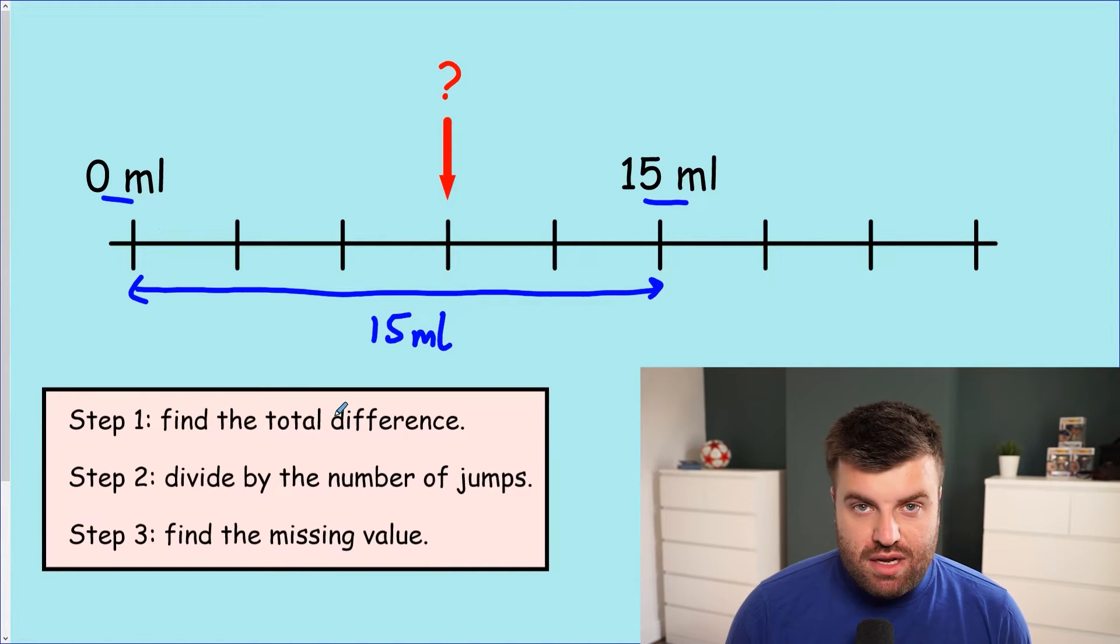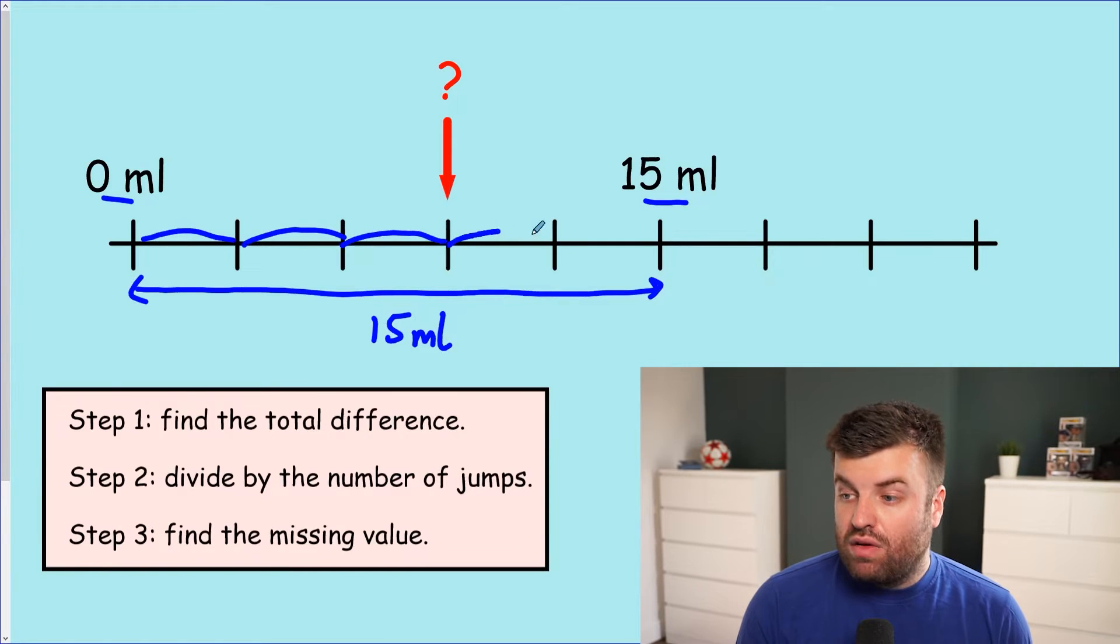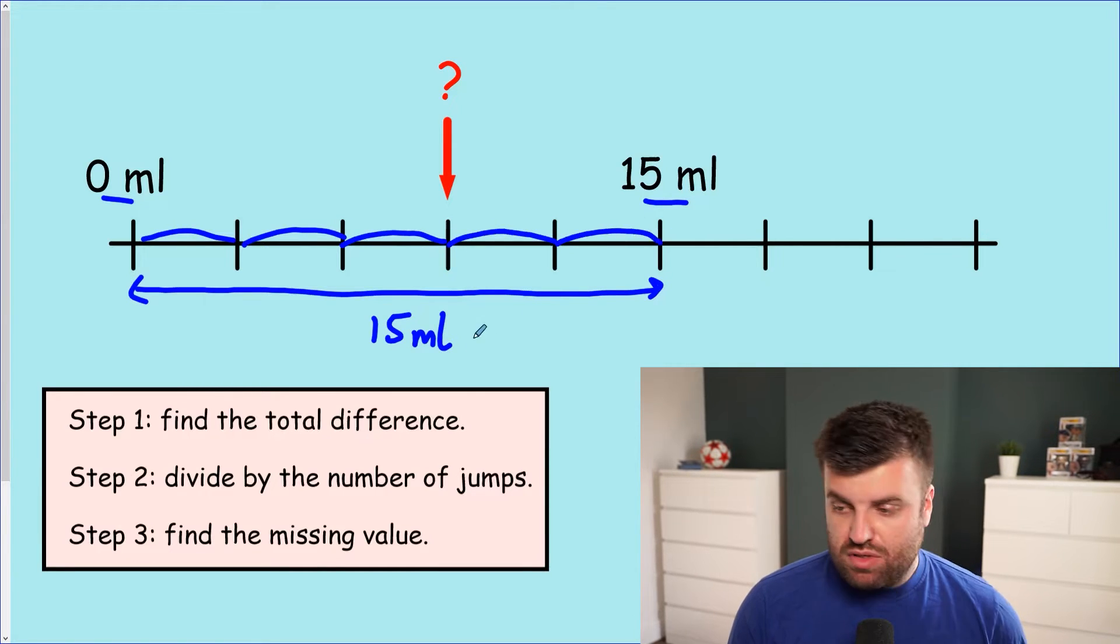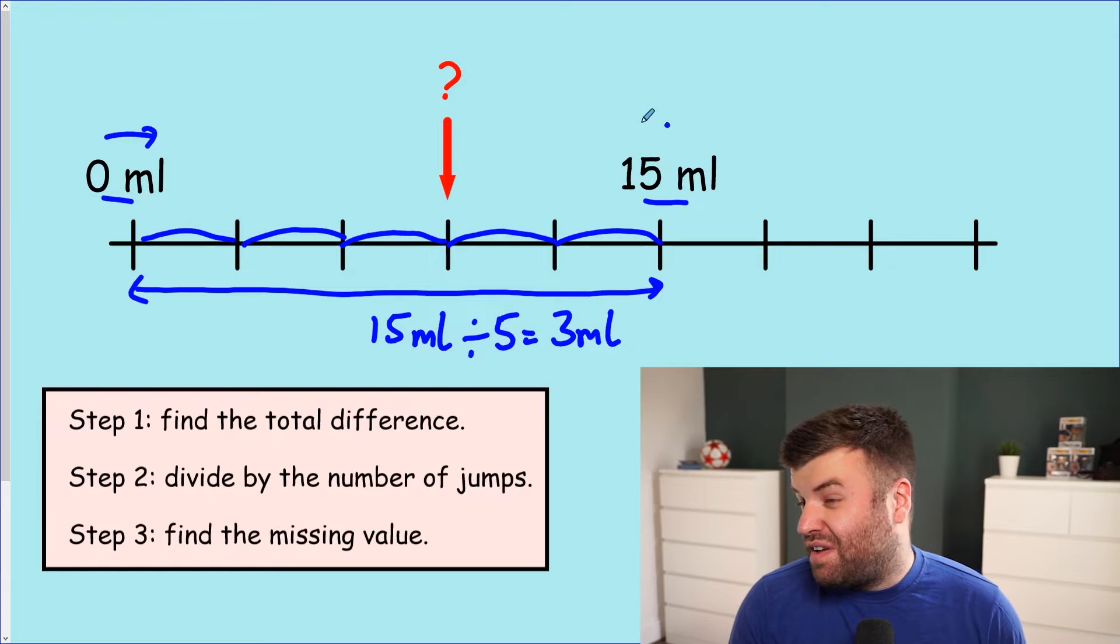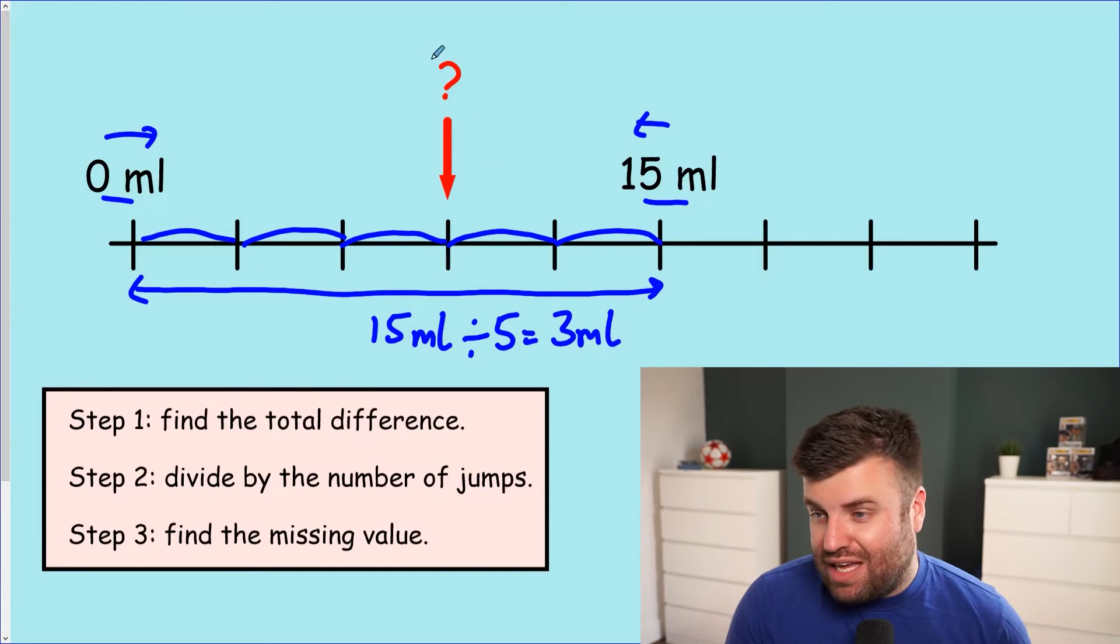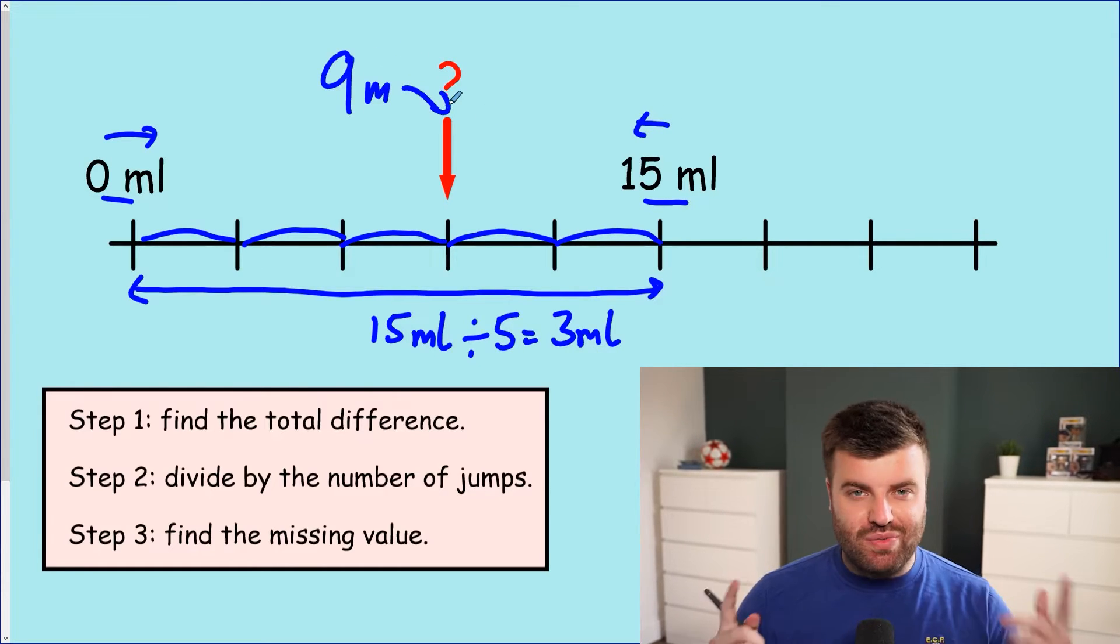Step two, divide by the number of jumps. We've got one jump, two, three, four, five jumps. So we're going to do 15 milliliters divided by five. Each jump, therefore, each interval, you might call it, is a three milliliter interval. Now we have three milliliters put for each interval. We can work out the answer. It's down to step three. We can go either from zero and count up. We can go to 15 and count down. It's up to you. Either way, guys, we should have got the answer of nine milliliters. Well done.